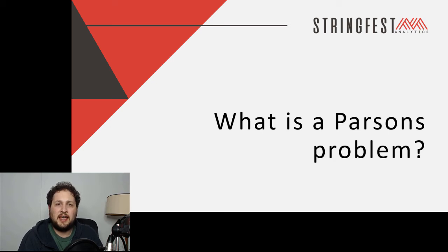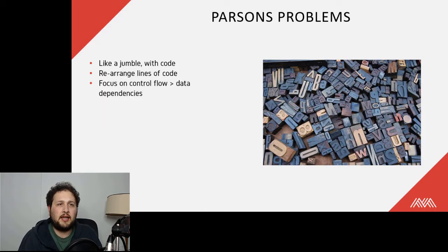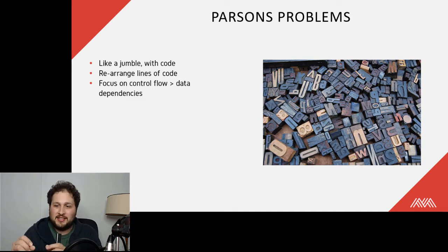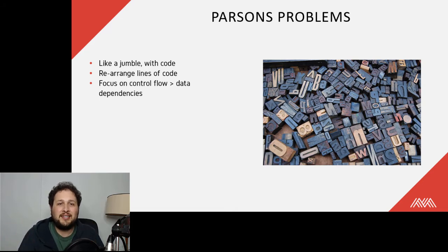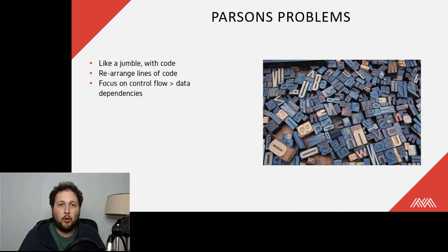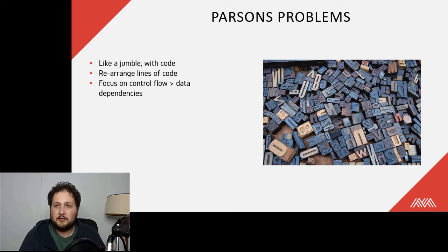Parsons problems — this is a way to teach coding that has a lot going for it. Before looking at an example, let's see what this does for us. A good way to think about Parsons problems is like a word jumble — if you've ever had to organize a bucket of words into a sentence, same idea here. We have lines of code and the learner needs to order them to meet some goal. The nice thing is that it's fun and interactive.